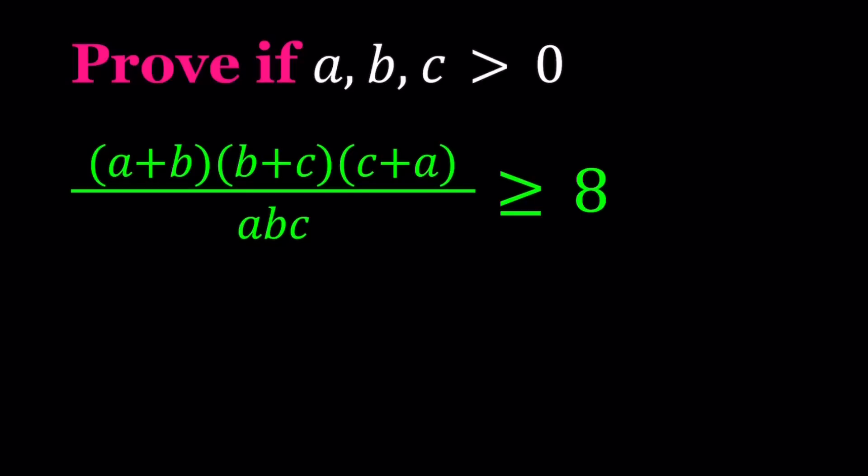Notice that ABC cannot be 0, so we don't have a problem with the denominator, and everything is positive. Since A, B, C are all positive, their product, their sum, and so on are all going to be positive quantities. I've done this inequality before and I'll share the link. But in this video, I'd like to introduce three methods.